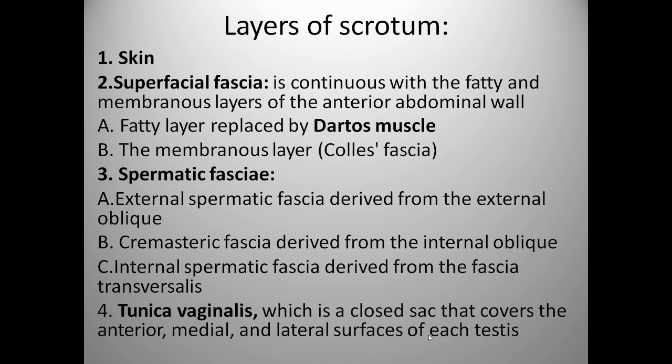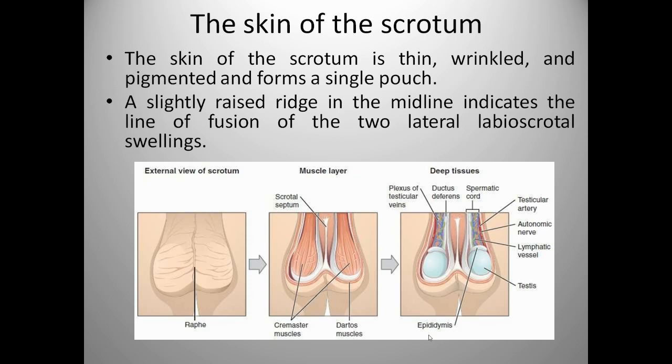Now we will see the tunica vaginalis, which is a closed sac that covers the anterior, medial, and lateral surface of each testis. The skin of the scrotum is thin, wrinkled, and pigmented and forms a single pouch. A slightly raised ridge in the midline indicates the line of fusion of the two lateral labioscrotal swellings.